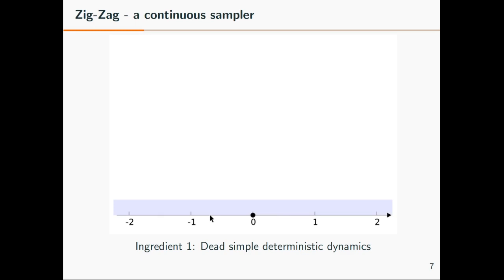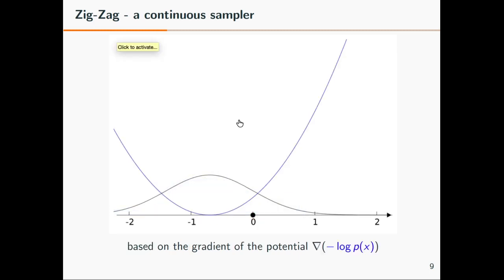For example, we can say exactly that the occupation time, the time it spends everywhere, corresponds to a uniform distribution, an improper uniform distribution on the entire space. We need a second ingredient, and you've already seen we have to add reflections. The reflections then turn the uniform distribution into the distribution you actually want to sample from. This particle, whether it reflects or not, depends on the gradient of the potential.